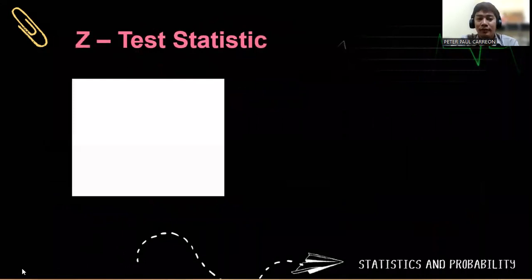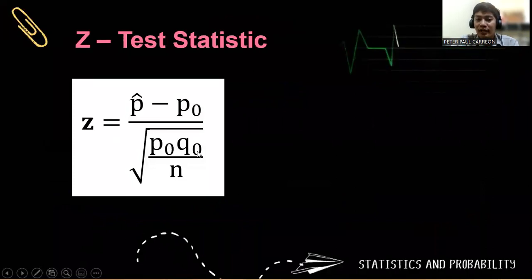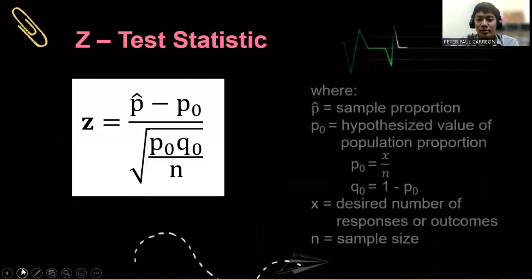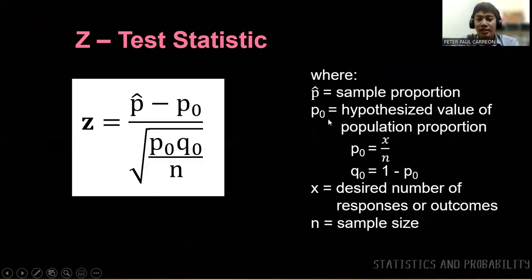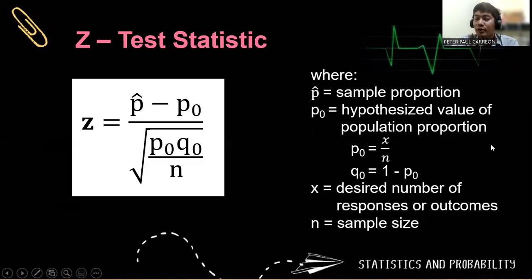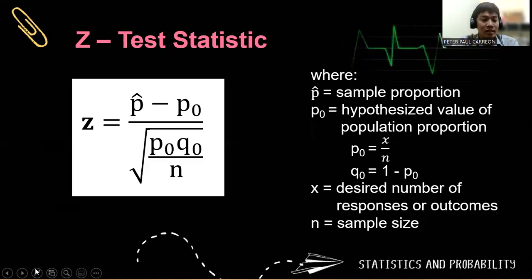What is the formula for the Z-test statistic? To get the Z value, that is P hat minus P sub 0 over the square root of the hypothesized value of P times the hypothesized value of Q over N. To get Q sub 0, you simply subtract 1 minus P sub 0. Our P hat is the sample proportion, P sub 0 is the hypothesized value of the population proportion, and P hat equals X — the desired number of responses or outcomes — divided by small N, the sample size.